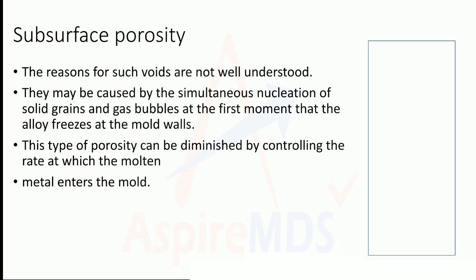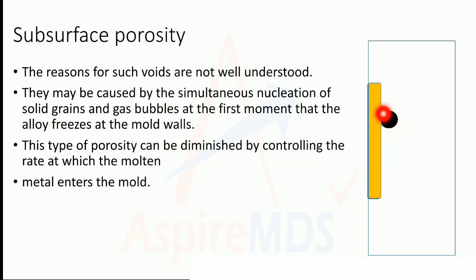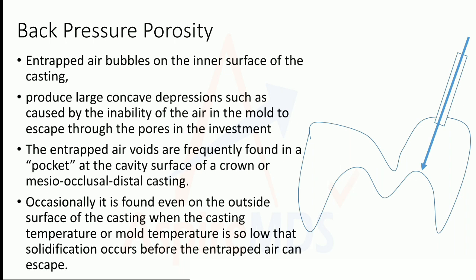Subsurface porosity is not well understood, but may be caused by simultaneous nucleation of solid grains and gas bubbles. Solid grains form on the surface while gas bubbles are present below the surface. On solidification, these gas bubbles become trapped just below the surface, forming subsurface porosity. This type can be diminished by controlling the rate at which molten metal enters the mold.